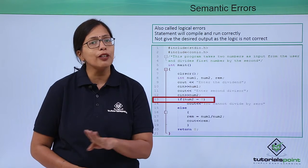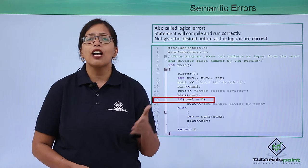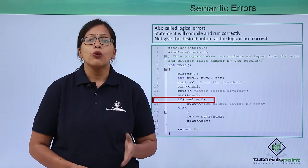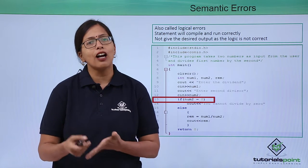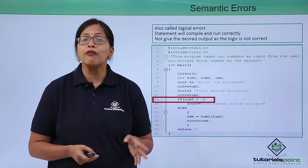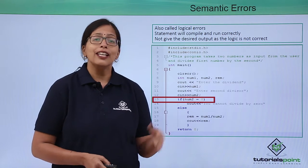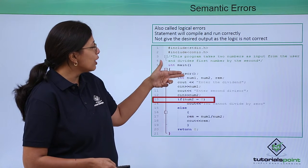Also, they will not be detected by the compiler like your grammatical errors. These errors are called semantic errors. When you actually execute your program, you will not get the answer as you had expected, and then you will know that you have made some logical errors. Let's take an example. This is a program that takes two numbers as input from the user.